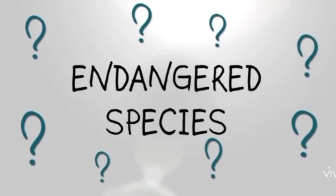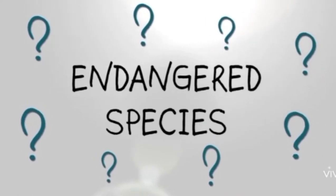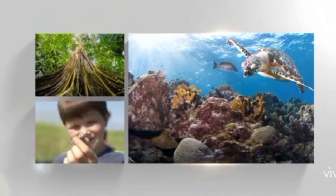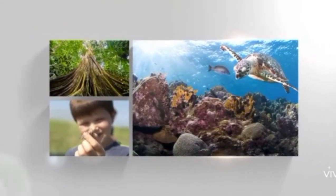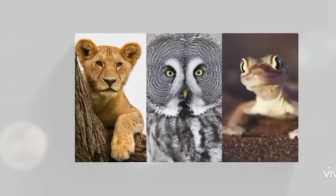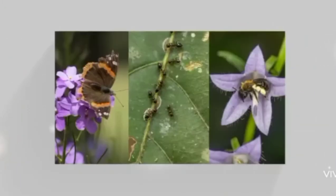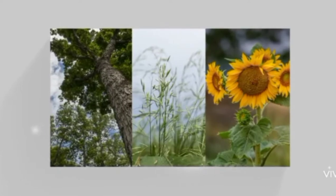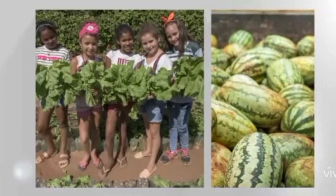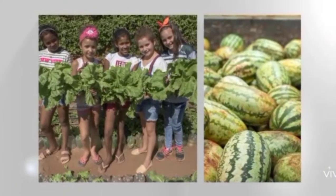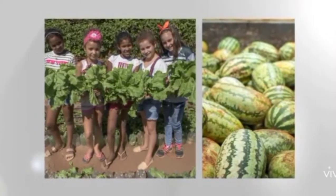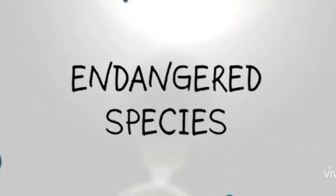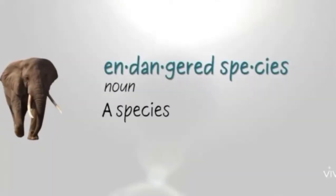Before starting the concept of endangered animals, we will see what species are. All organisms including human beings, plants, animals, and insects — and their groups — are called species. These include lions, owls, insects, bees, butterflies, trees, flowers, and in fact the fruits and vegetables that we eat are also species.